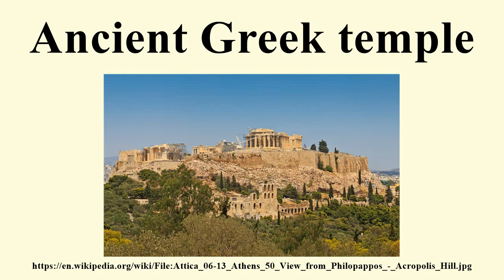An additional definition, already used by Vitruvius, is determined by the number of columns at the front. The term decastyle is only used for the 12-column hall at the Didymaion, and no temples with facades of that width are known. Very few temples had an uneven number of columns at the front; examples are the Temple of Hera at Paestum and the Temple of Apollo at Metapontum, both with nine columns, and the archaic Temple at Thermos with five columns.